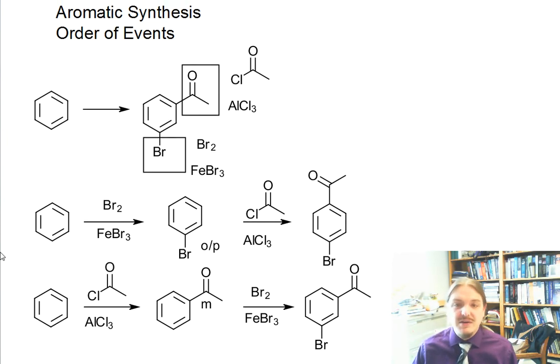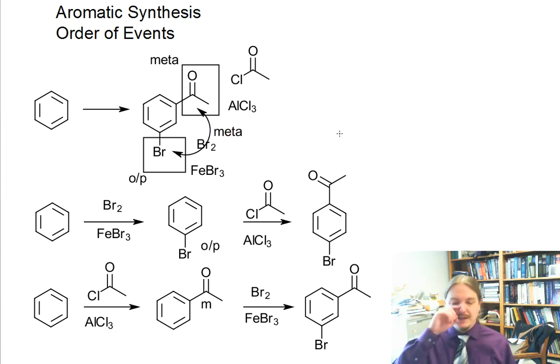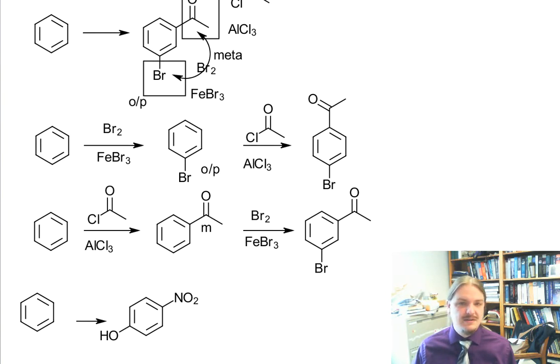We could have done this analysis before we started drawing out any of these pathways. We could have said, what do I have on my ring? I have a meta director. I have an ortho para director. And the two functional groups that are present are meta to each other. What that means, since we have those two functional groups meta to each other, I might want to put the meta director on first and the ortho para director on second. So this first one is the way to go.